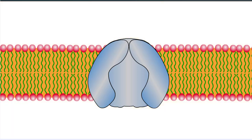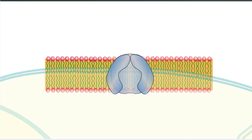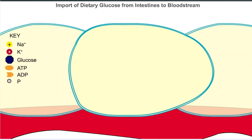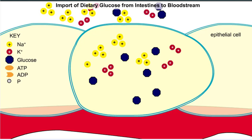The import of dietary glucose for use by tissues of the body brings together all elements of conformational transport. In this process, intestinal epithelial cells use uniport, symport, and antiport mechanisms to move glucose from the intestinal space into the bloodstream.